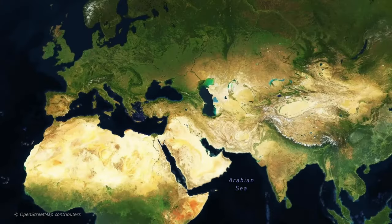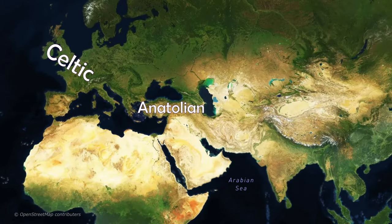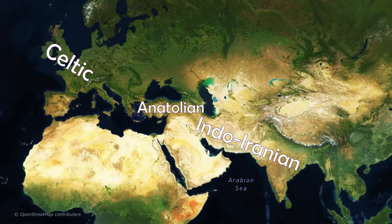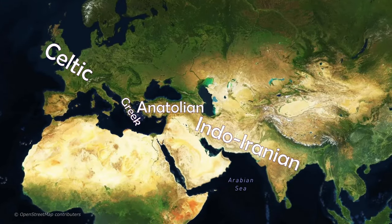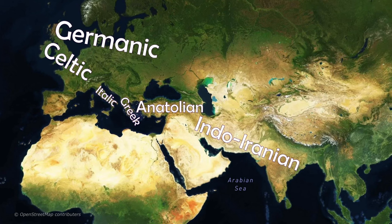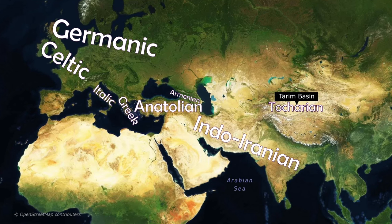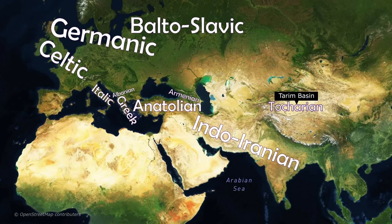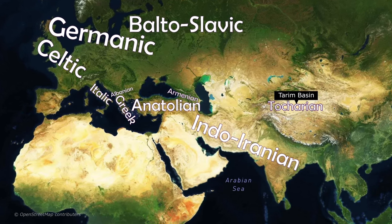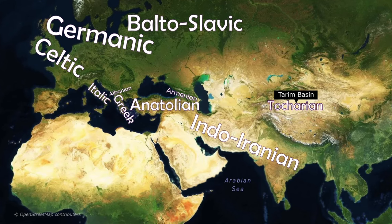This family of languages can be broken down into 10 main branches, which are: Celtic, Anatolian, Indo-Iranian, Greek, Italic, Germanic, Armenian, Tocharian, Balto-Slavic, and Albanian.